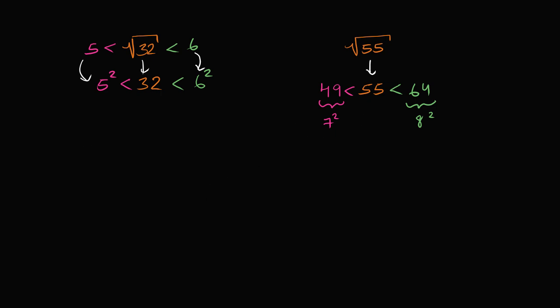And of course, 55, just to make it clear what's going on, 55 is the square root of 55 squared. That's by definition. And so the square root of 55 is going to be between what? It's going to be between 7 and 8. So 7 is less than the square root of 55, which is less than 8.